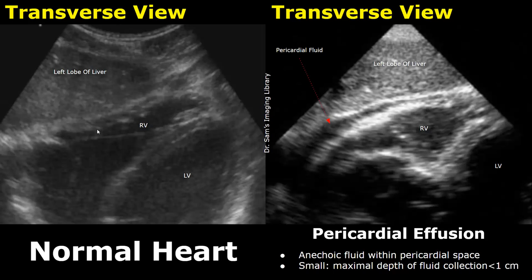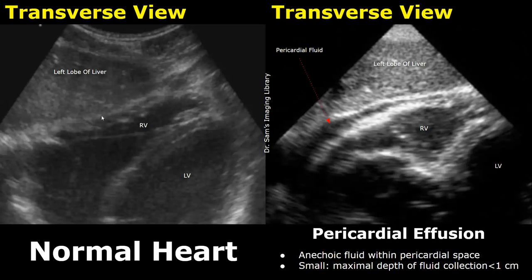Starting with the pericardium, the first image shows a normal pericardium. Notice how the heart is encased within a thin, smooth, and echogenic line, which is the pericardium. In this image, the pericardial space is free from any excess fluid accumulation, and the heart has a normal range of motion.